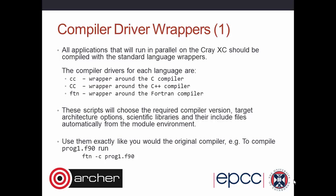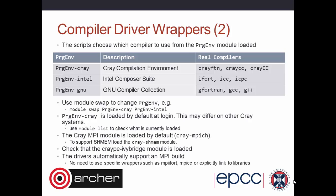Which compilers you actually call is determined by the programming environment module — a meta-module you load once. The default programming environment is 'PrgEnv-cray', so when you type 'ftn', 'cc', or 'CC', you get the Cray versions: crayftn, craycc, and crayCC. If you swap to 'PrgEnv-intel', you get ifort, icc, and icpc. If you switch to 'PrgEnv-gnu', you get gfortran, gcc, and g++. You still type the same wrapper command, but it calls the appropriate underlying compiler. Module swap is used — for example, 'module swap PrgEnv-cray PrgEnv-intel'. You can put this in your bash profile if you want it every time you log in.